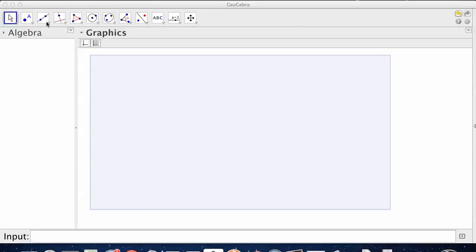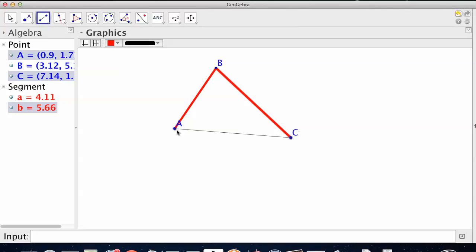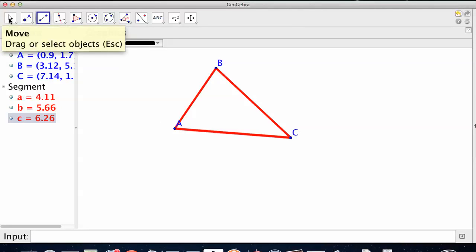Alright, we're doing lines inside of triangles. We need a triangle. B to C, C to A. Awesome.